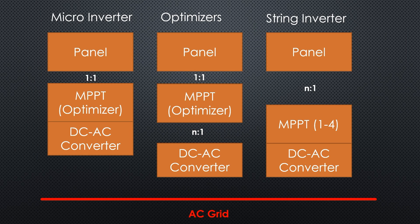For a start, microinverters contain an optimizer and a DC to AC converter in one box below each panel. Because they produce AC, working with batteries is not easy. Optimizers need a DC to AC converter in the basement, like string converters — they efficiently work with batteries. SolarEdge installations have to have an optimizer for all panels. Other manufacturers, like Huawei, allow adding optimizers where needed.